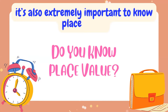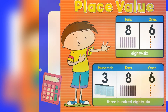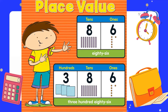The next step, which is also very important, is to know place value. Do you know place value? Okay, let's go over place value. Here we have two numbers: 86 and 386. In the first number, 86, I have eight tens and six ones — that's why my number is 86, I just have tens and ones. In the second number, 386, I have hundreds, tens, and ones — that's why my number is 386. Now that we have reviewed place value, let's see how to apply it to round numbers.